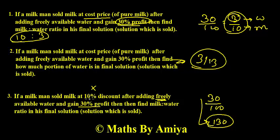We are discounting 10%. The water is freely available. So we need to discount milk. Discount 10% becomes 90.